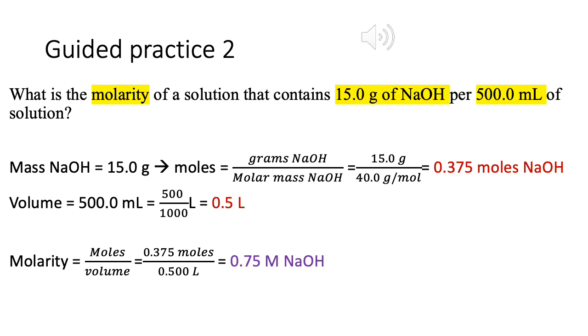Now from the first slide, you know the molarity formula is moles per volume. You have your moles, 0.375. You have your volume, 0.5. You divide your moles by liters and you end up with 0.75 molarity.